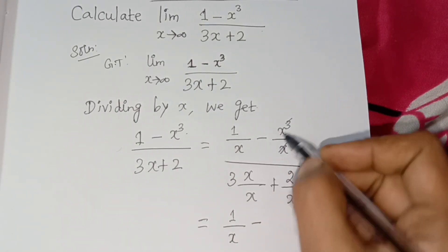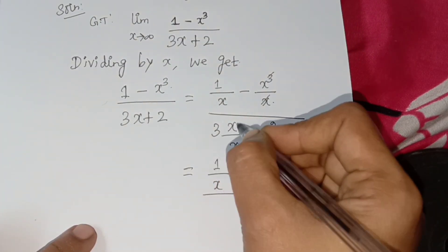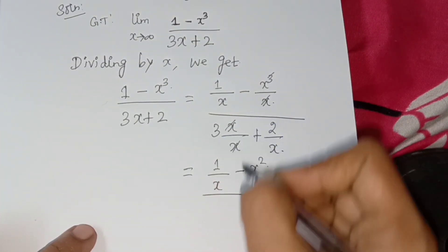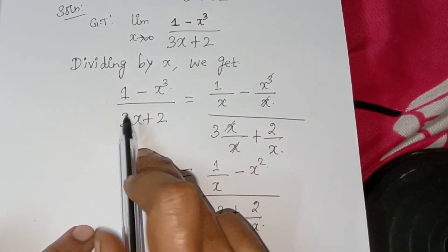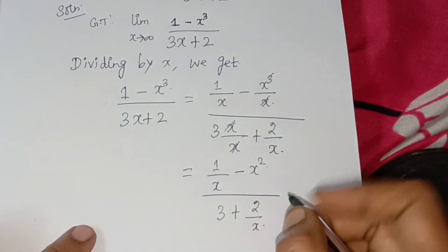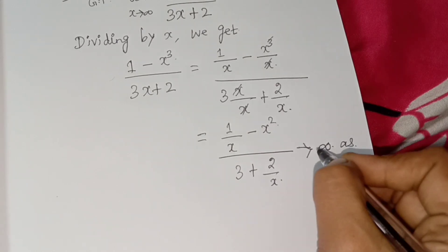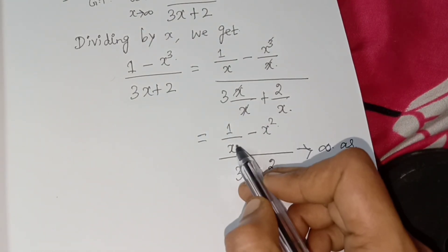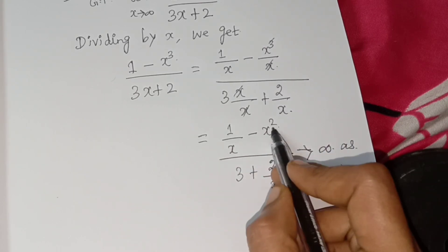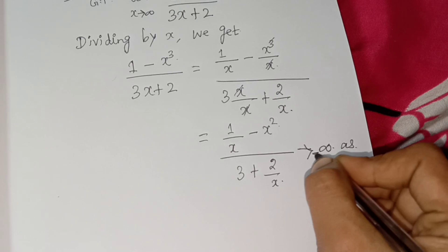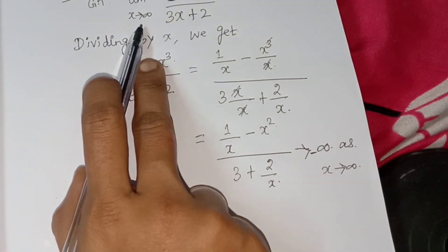Divided by denominator x cancel 3 plus 2 by x. As x tends to infinity, minus infinity as x tends to infinity.